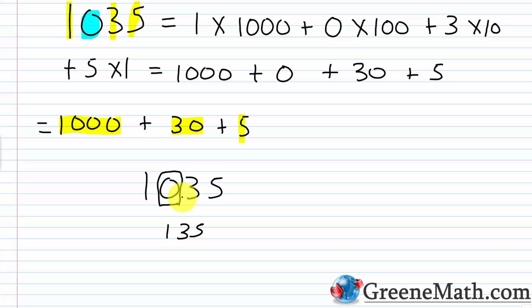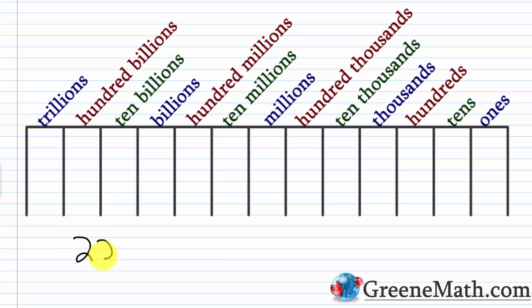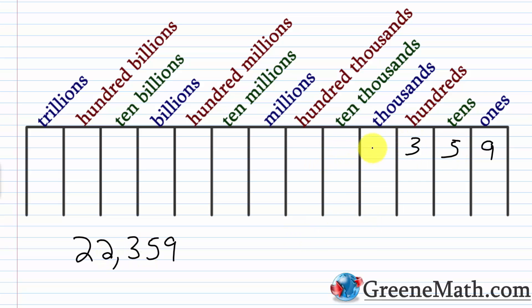Let's take a look at another one. Let's say we want to write the number 22,359 in expanded notation. Let's get the place value first. Feeding this into the place value chart: the 9 goes in the 1s place, the 5 goes in the 10s place, the 3 goes in the 100s place, the 2 goes in the 1,000s place, and this 2 here goes in the 10,000s place. To write the number in expanded notation, again we form the sum of each digit multiplied by its corresponding place value.